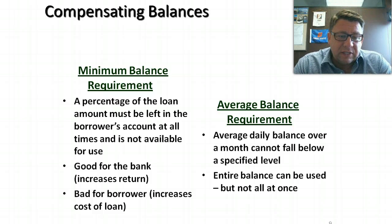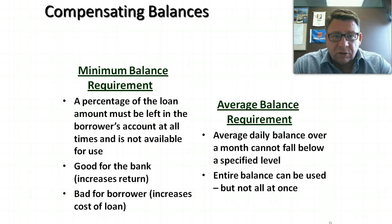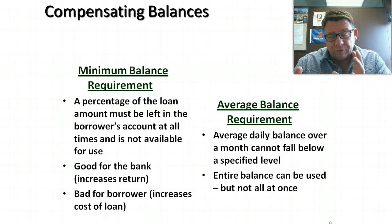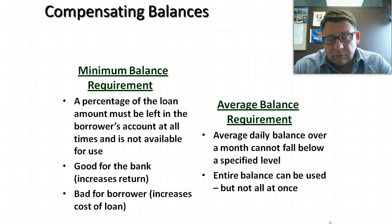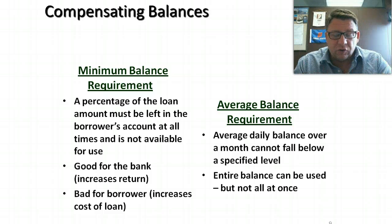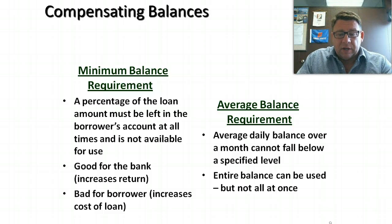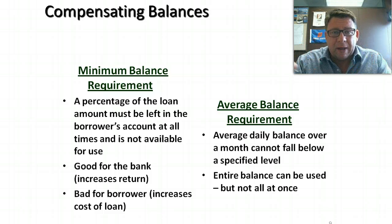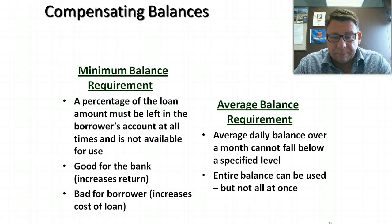Compensating balances. Sometimes the bank requires a percentage of the loan to be left in the account and available at all times. So you borrow a million dollars, a compensating balance may be $100,000. You've borrowed a million, you're going to pay back a million plus interest, but $100,000 has to be left in the bank account and cannot be used. This is good for the bank because it increases the return — they're earning interest on the million but only have exposure of $900,000. It's bad for the borrower because it increases the cost of the loan. Sometimes a bank might also require average balance requirements, where a firm must maintain a minimum balance averaged over a day or week.